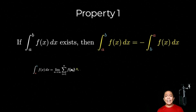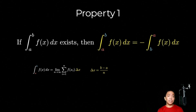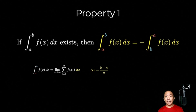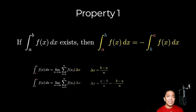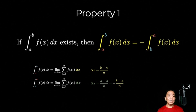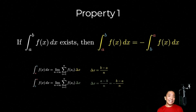So bakit totoo ito? Balikan natin. Ang definite integral from a to b of f of x is equal to the limit as n approaches infinity of the summation from i equals 1 to n of f of x sub i times delta x. Ang important dito, ang delta x sa kanya ay b minus a over n. If we take a look naman at the definite integral from b to a of the same function, it's the limit as n approaches infinity of the summation from i equals 1 to n of f of x sub i times delta x. But ang delta x dito will be a minus b over n, which is the negative of b minus a over n. So dun sa delta x na part, tayo magkakaroon ng switching ng signs, kaya yung definite integral from a to b will be the negative of the definite integral from b to a.